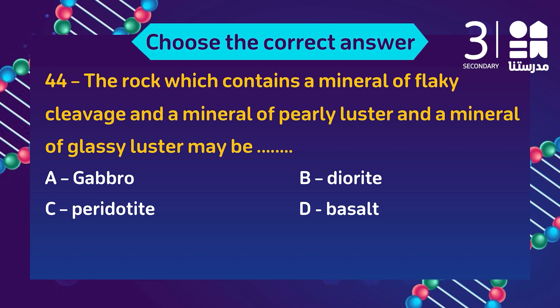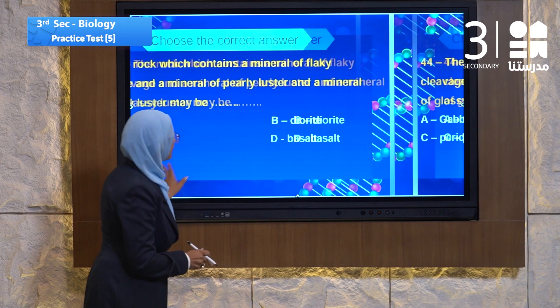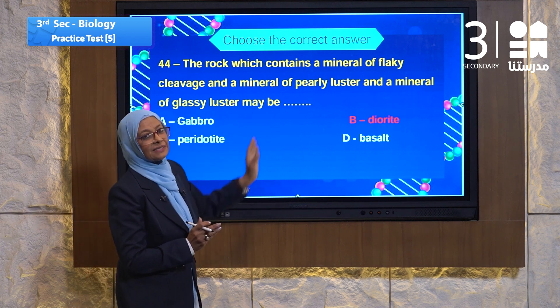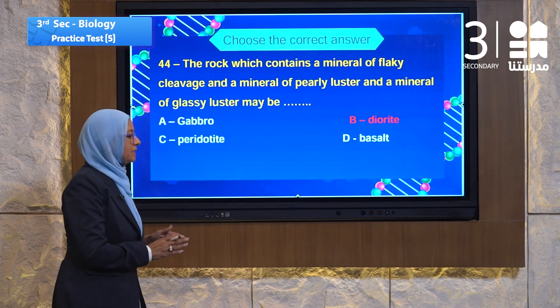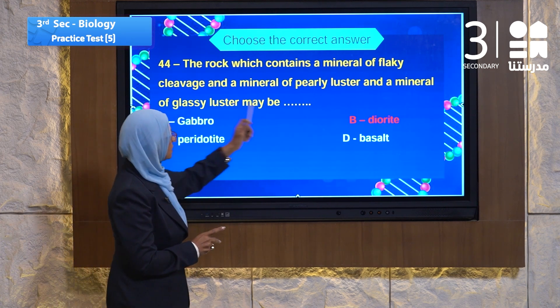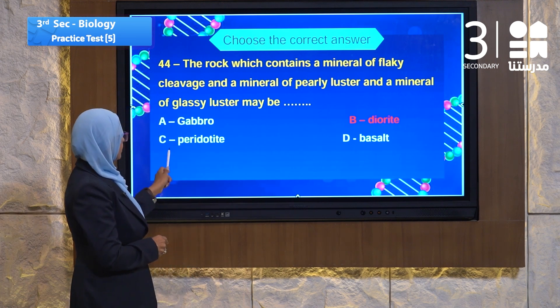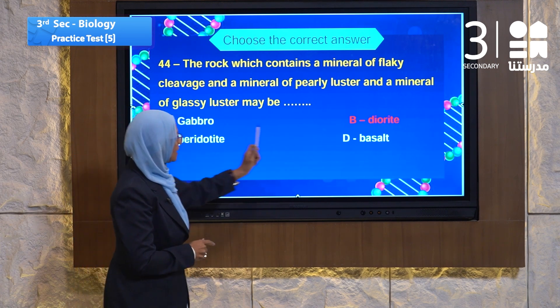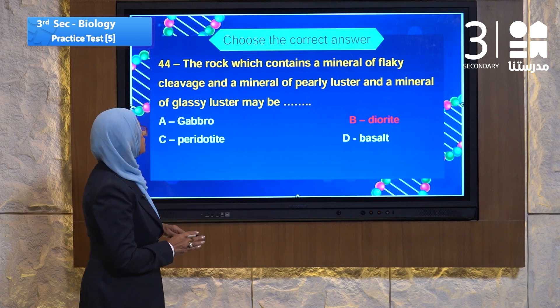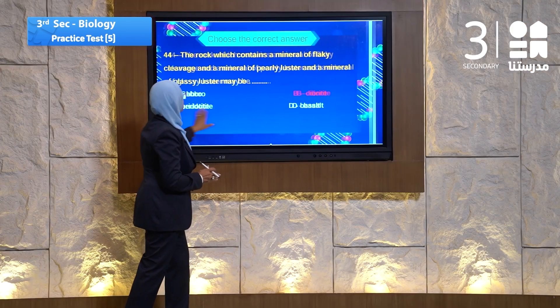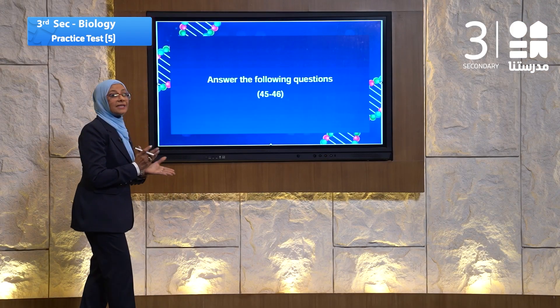Question 44 is about igneous rocks. The rock which contains a mineral of clicky cleavage, pearly luster, and glassy luster must be diorite. Reading the choices: gabbro, diorite, peridotite, and basalt — the answer is diorite, which contains all of those mineral characteristics.